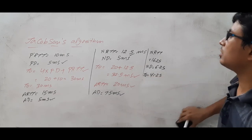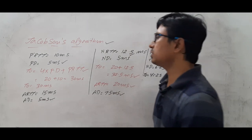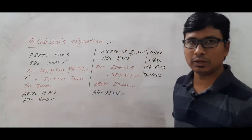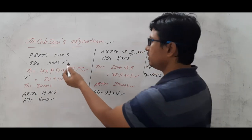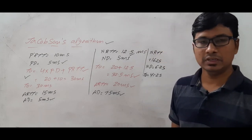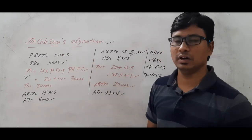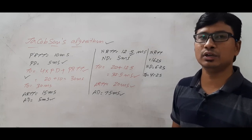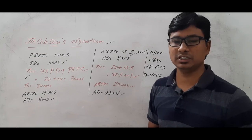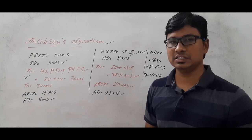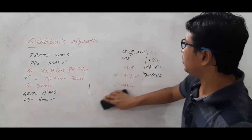This is the way the Jacobson algorithm works. You need to remember how to compute the timer value, how to compute the next deviation, and the next round trip time. I hope you have understood how the Jacobson algorithm works. If you still have any doubts related to this concept, feel free to ask me in the comment section and I will try to clear your doubts in less than 24 hours.